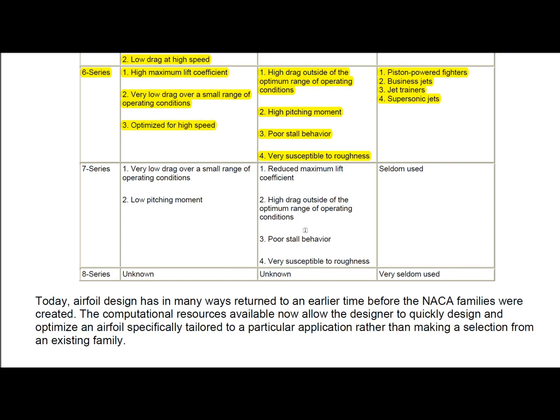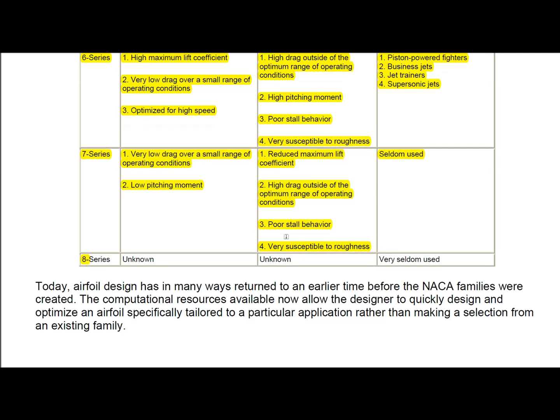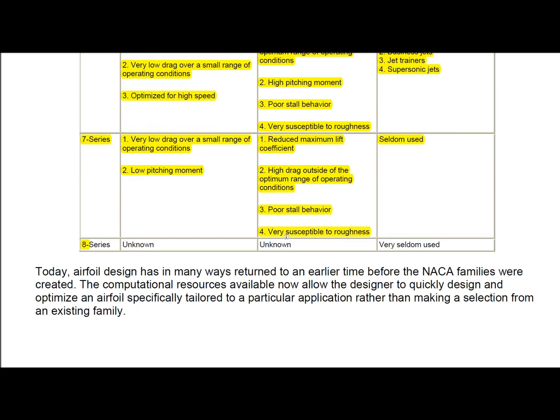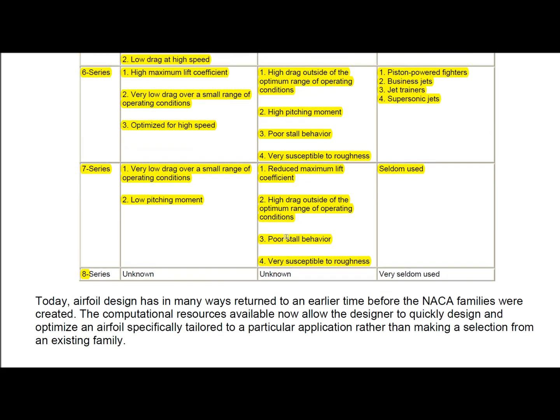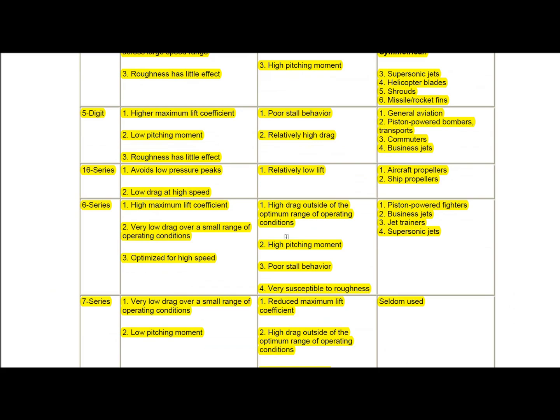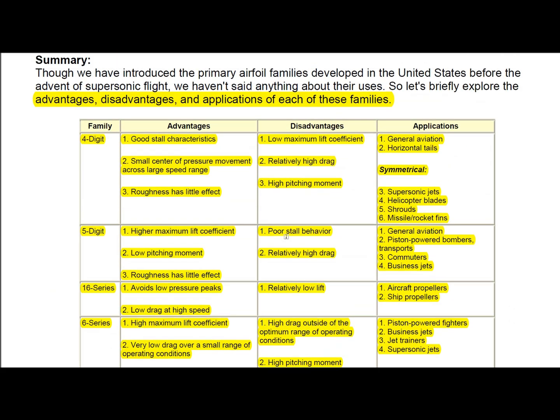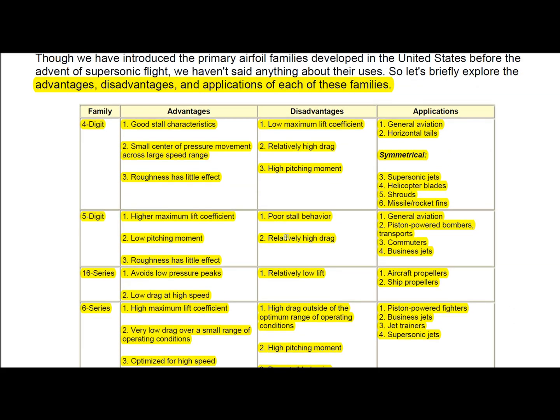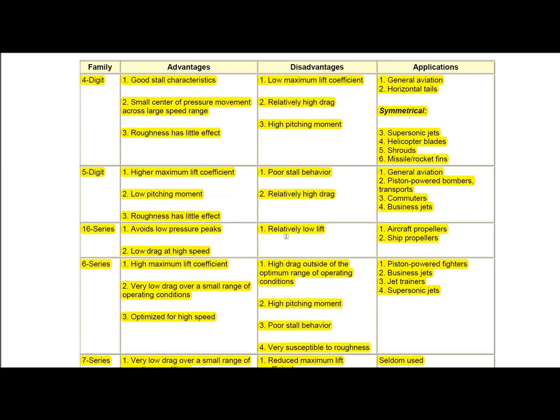NACA 6 series airfoils has high maximum lift coefficient, very low drag over a small range of operating conditions, optimized for high speed. The disadvantages are high drag outside of the optimum range of operating conditions, high pitching moment, poor stall behavior. These airfoils are mostly used in piston powered fighters, business and supersonic jets, jet trainers.